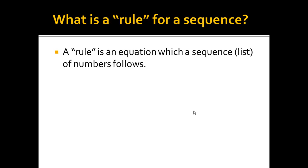All right, a rule, as always, is an equation where a sequence of numbers follows. Same type of situation here. The general form, it looks a little different because I'm multiplying. So I have a sub 1 times r to the n minus 1 power.